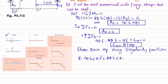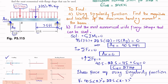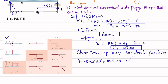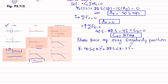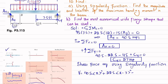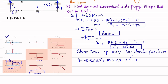For the 22.5 kip downward load at a = 3 feet, the term is −22.5⟨x − 3⟩^0. For the uniformly distributed load of 3 kips per feet starting at a = 0, the shear force contribution is −w⟨x − a⟩^1 = −3⟨x − 0⟩^1.